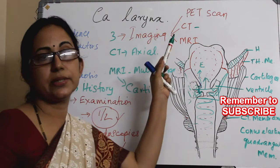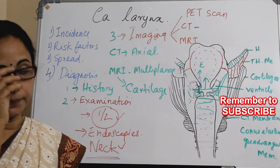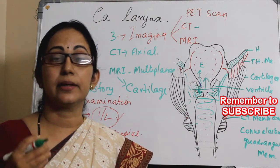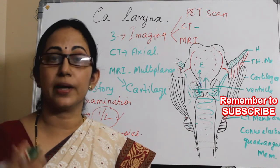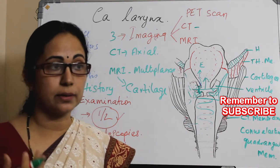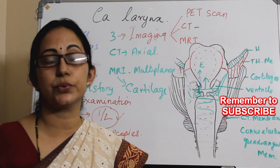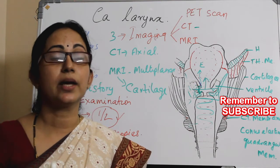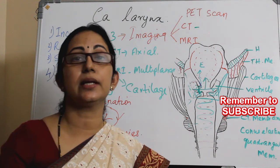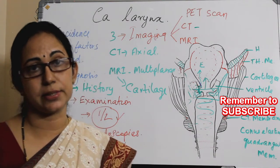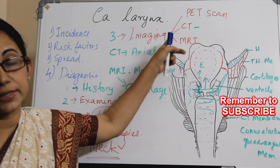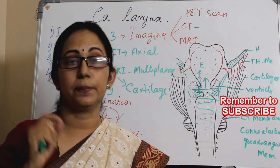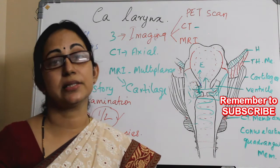Regarding the role of PET scan: in residual or recurrent cases, diagnosis will be difficult because of edema — it is hard to determine whether changes are due to recurrence, residual lesion, or radiotherapy-related mucositis. If you go for a biopsy, it can lead to chondritis or perichondritis. In those cases, PET scan will give a correct indication of whether a residual or recurrent lesion is present or not.